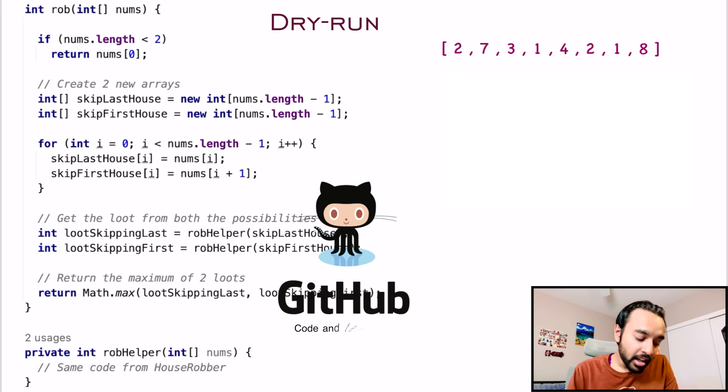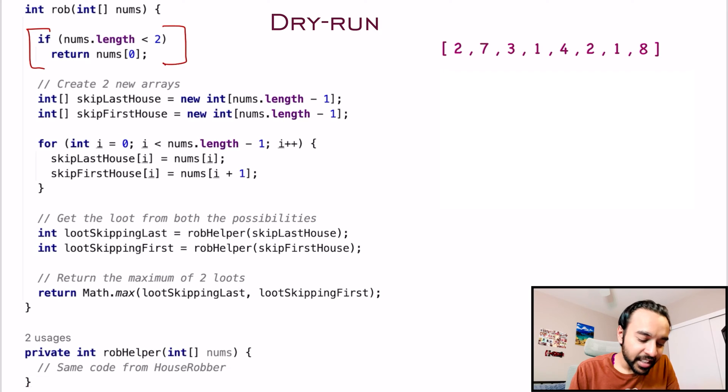Moving on with the dry run, first of all, we start off with the base case. If the array length is less than two, just return whatever is the maximum value. And if you only have one house, that will be your maximum loot.